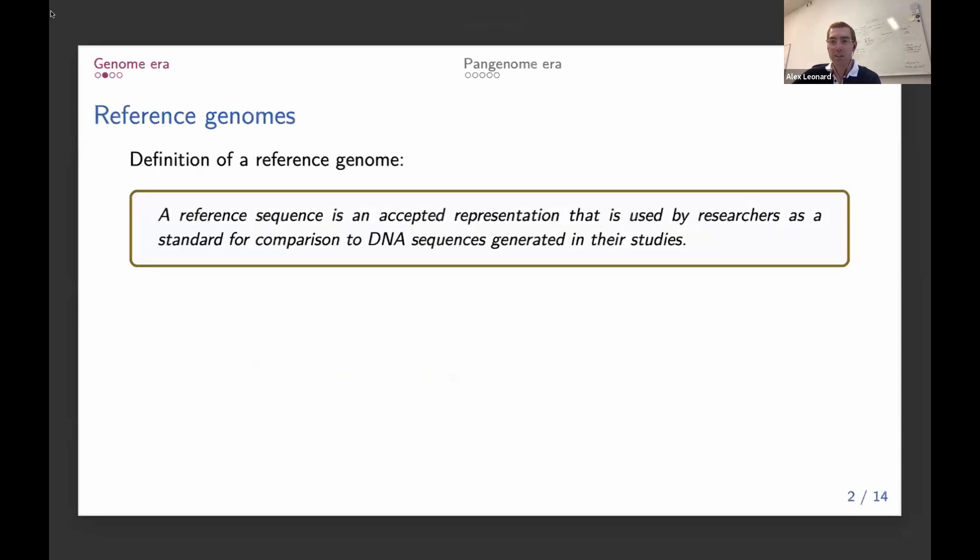A reference genome is basically just a single representative genome sequence that we can use, such that many different groups across the world, when they work on the same species, we can all talk about the same position, the same gene, the same variant.